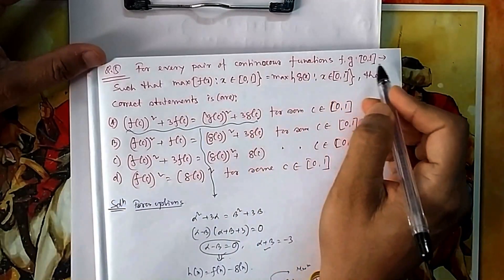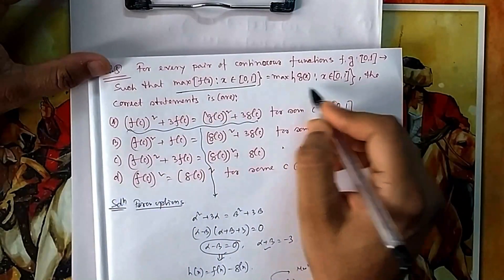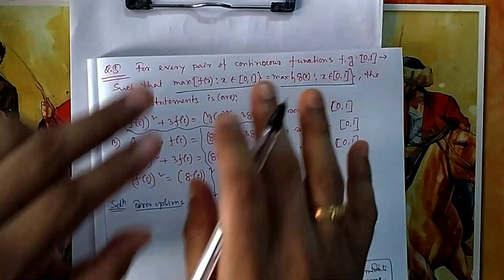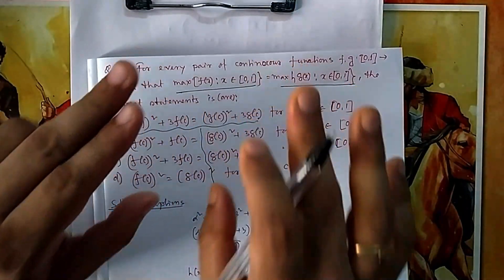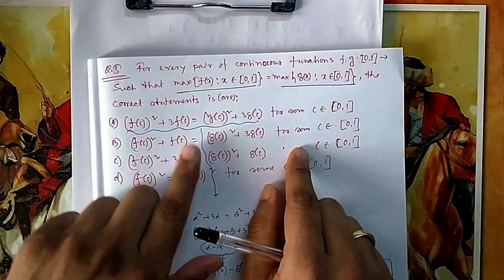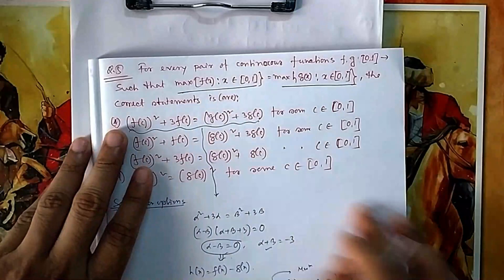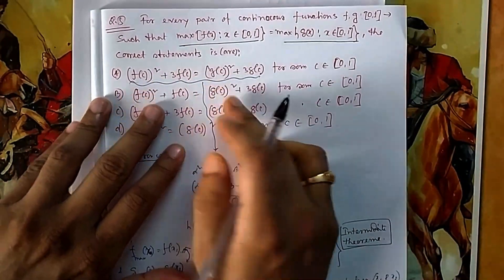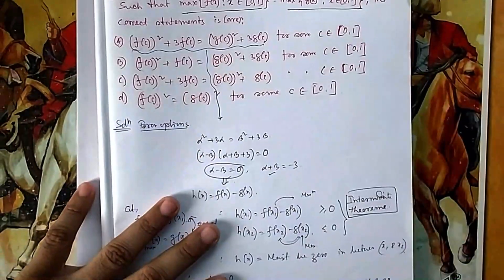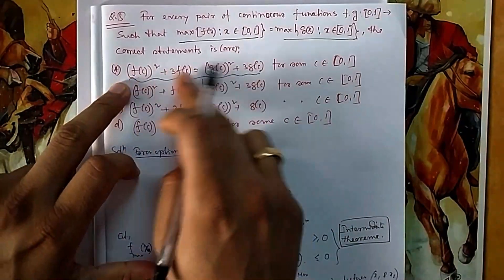Now moving to question number 5: for every pair of continuous functions f and g on [0,1] such that the maximum of f(x) equals the maximum of g(x) over [0,1]. Their maximum values are the same height, but they need not be attained at the same point — one can peak at x₁ and the other at x₂. We need to identify which statements are always true.